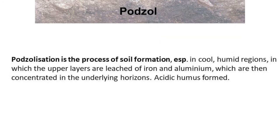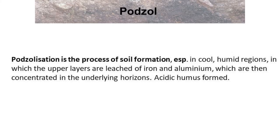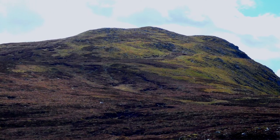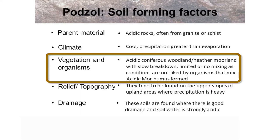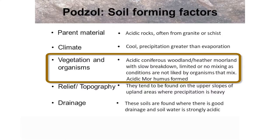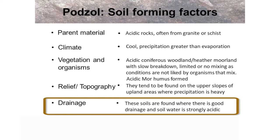Podzolisation is the process of soil formation, especially in cool, humid regions, where precipitation is greater than evaporation, and in which the upper layers are leached of iron and aluminium, which are then concentrated in the underlying horizons. Podzols are formed on acidic parent material such as granite or schists, and under coniferous woodland with acidic litter such as pine, spruce or heather moorland, where there is very little mixing by soil organisms, causing an acidic mor humus to be formed. They are found generally on the slopes of upland areas, where the rainfall is heavy and the drainage is good, at least until there is an iron pan.